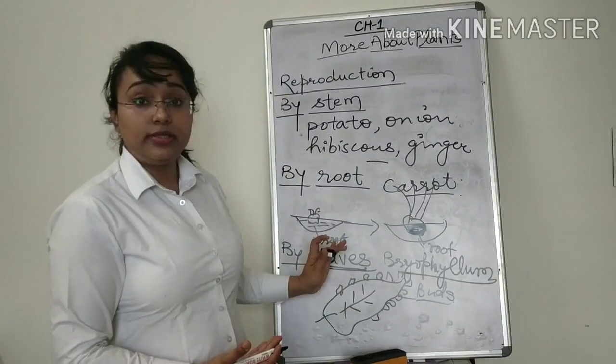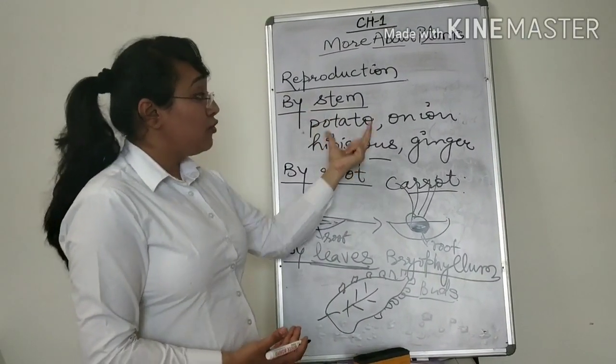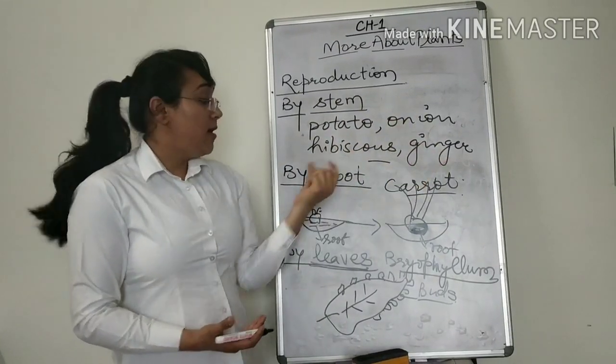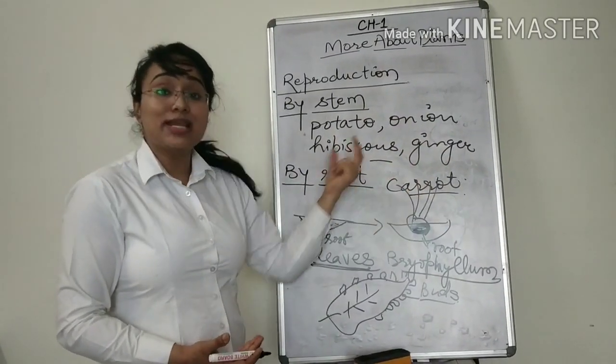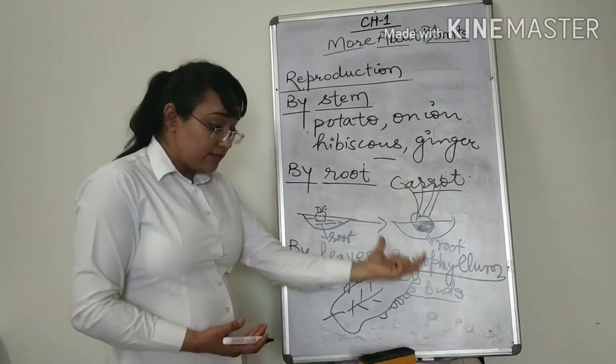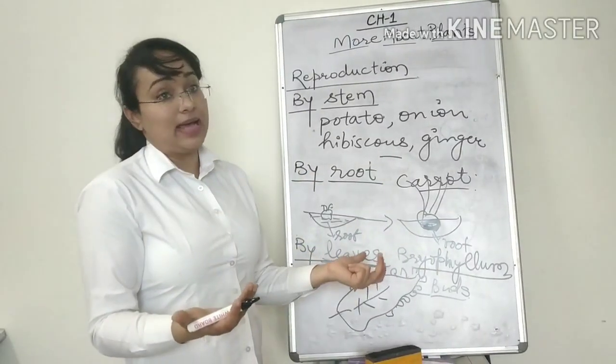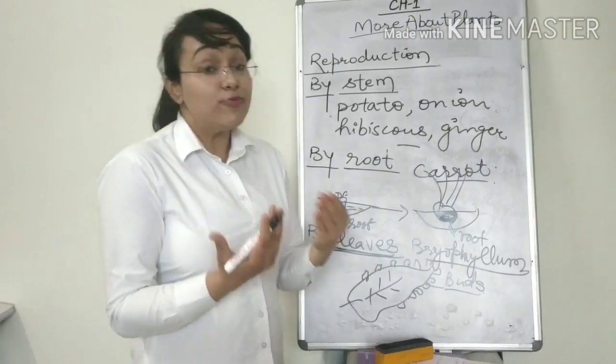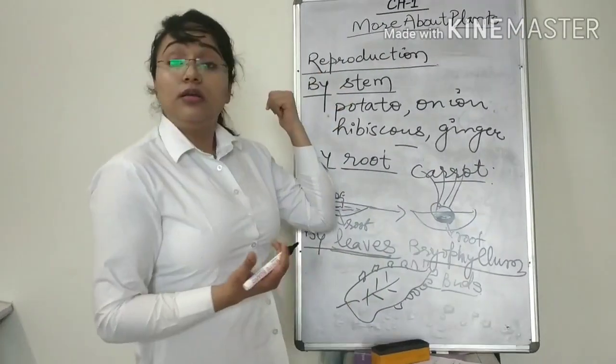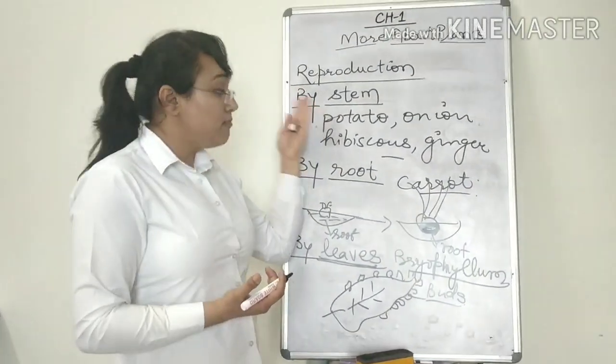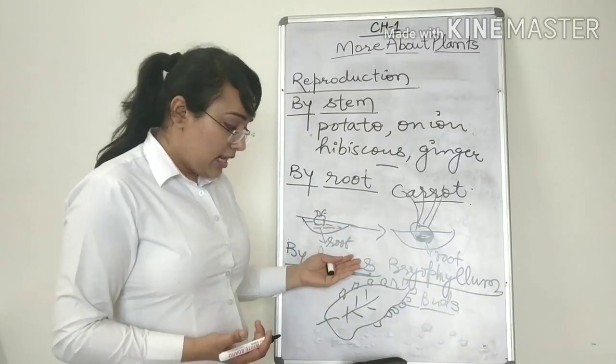So these are the few methods. By stem, we can grow these types of plants. By roots, we can grow these types of plants. By leaves, we can grow certain kind of plants. So these are the methods of reproduction using seed, using stem, using root and using leaves.